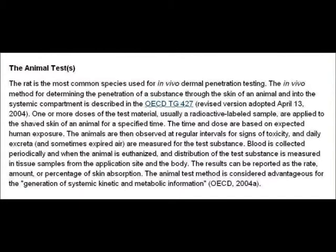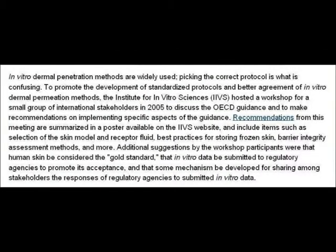The animal test method is considered advantageous for the generation of systemic, kinetic and metabolic information. Systemic kinetic means the movement of the drug around the body — i.e. where does it end up, its motion. And metabolic information means has it changed its formation or not, or has it stayed what it was when it was first applied to the skin.